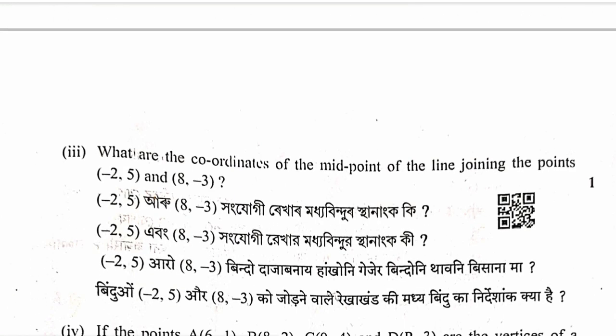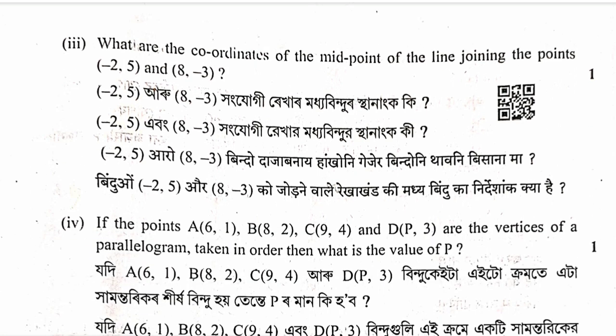Question: What are the coordinates of the midpoint of the line joining the points (minus 2, 5) and (minus 8, minus 3)? Using midpoint formula: x equals x1 plus x2 by 2 equals minus 2 plus minus 8 by 2 equals minus 10 by 2 equals minus 5. Wait, correction: minus 6 by 2 equals minus 3. y equals 5 plus minus 3 by 2 equals 2 by 2 equals 1. Therefore midpoint is (minus 3, 1).